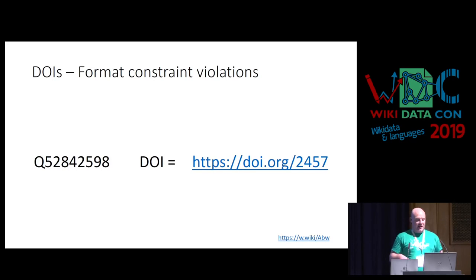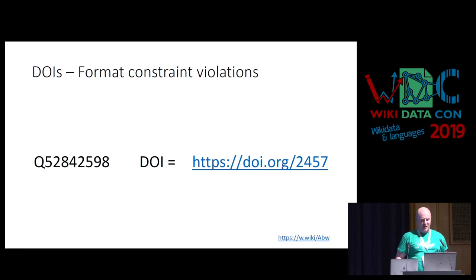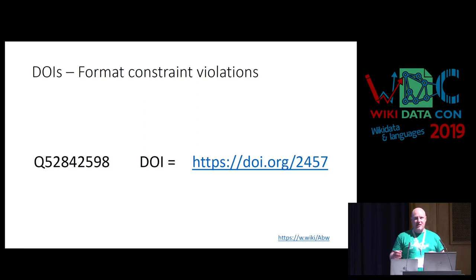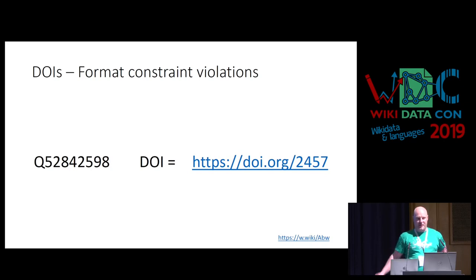Moving on to DOIs — when I was looking at how many scholarly papers we have, I immediately noticed that we have DOIs that are just four characters. That is not a correct DOI. We've got about 110 items with this DOI format. In the grand scheme of things, not that big a problem, but it's been created by an automatic process and no one has checked and corrected it. So it's an appeal I want to make: if you're doing batch imports, check what you're doing and look for these obvious data quality problems.